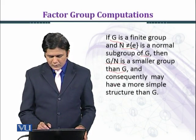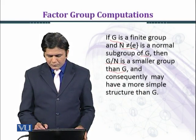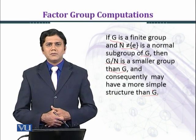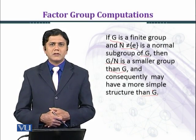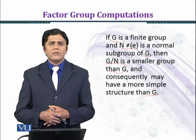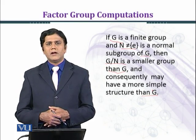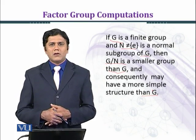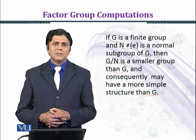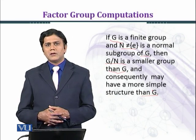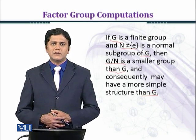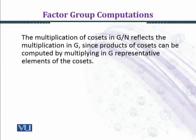Consequently, we may have a more simple structure than G. جب N آپ کے پاس G کا non-trivial proper normal subgroup ہو — یعنی N not equal to singleton {e} — تو G/N کا order، G سے less ہوگا۔ اس لیے G/N کا structure، G سے زیادہ simpler ہوگا۔